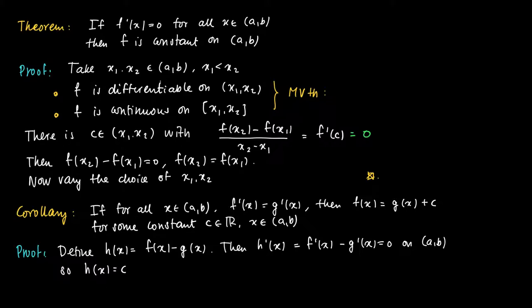So by virtue of the theorem above, we know that h should be a constant on (a,b). For some c in R, we know that h equals c. But then the difference of f and g is a constant, so we know that f equals g(x) plus c, which we needed to show.